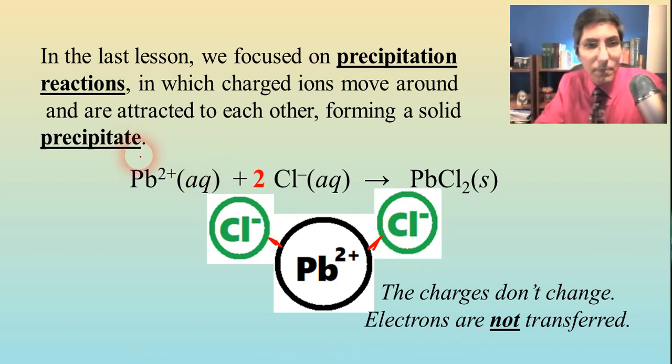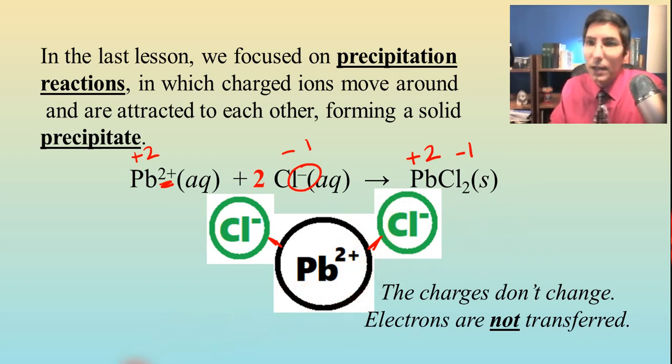So in the reactant side of this, lead was a plus 2, as you can see right here. Chloride was a minus 1, as we can see here. And the charges were the same on the product side. So this is very typical of reactions that take place in solution where we're making a solid precipitate.